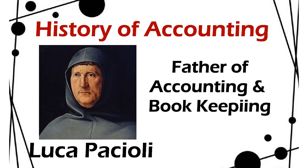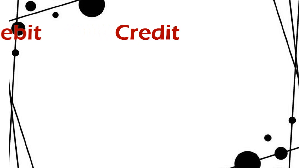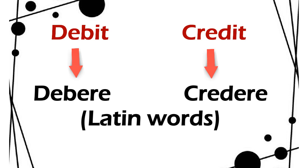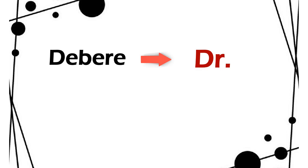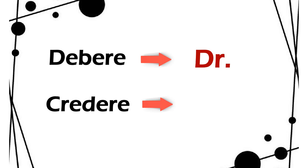The first person to publish a work on double-entry bookkeeping in 1494 — the first person to publish it, not that they invented it — was the first one to describe the system of debits and credits. But debit and credit are actually English translations of the Latin words 'debere' and 'credere'. While translating his work from Italian language to English, the abbreviations changed. DR is DR, and debit is also derived from that.